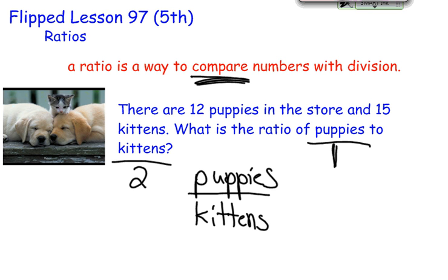Now from here we can say, okay, if puppies is on top and kittens is on bottom, let's plug in some numbers. We have 12 puppies, so 12 is on top, compared to 15 kittens. And so it would be easier to say, I have a ratio of 12 to 15.